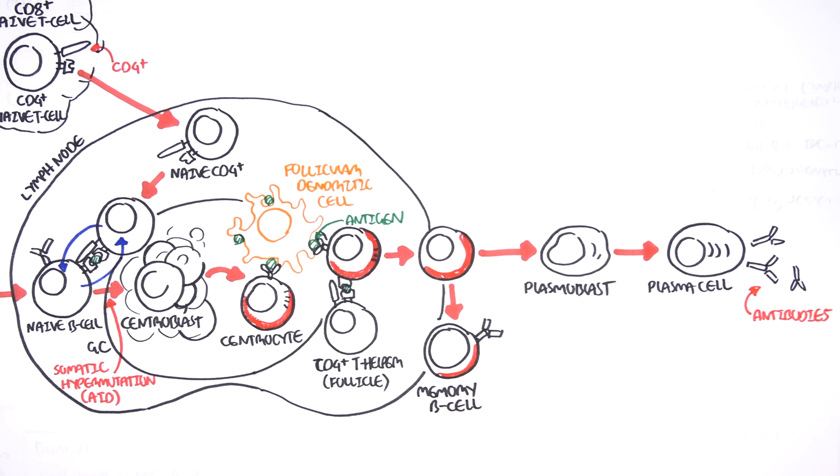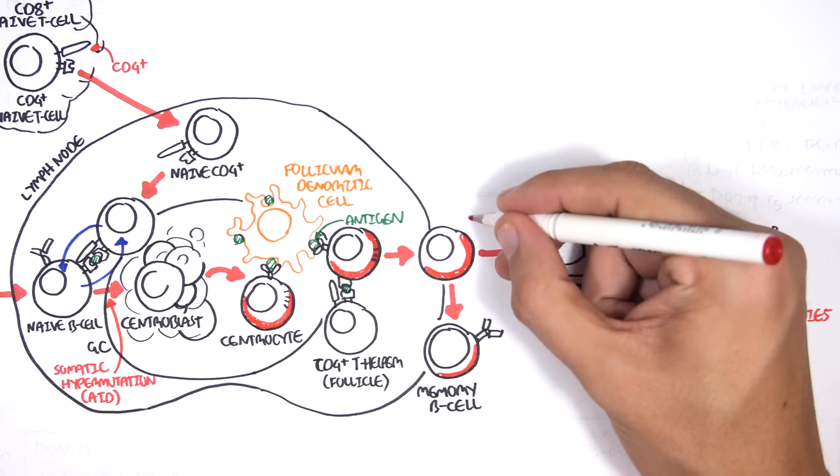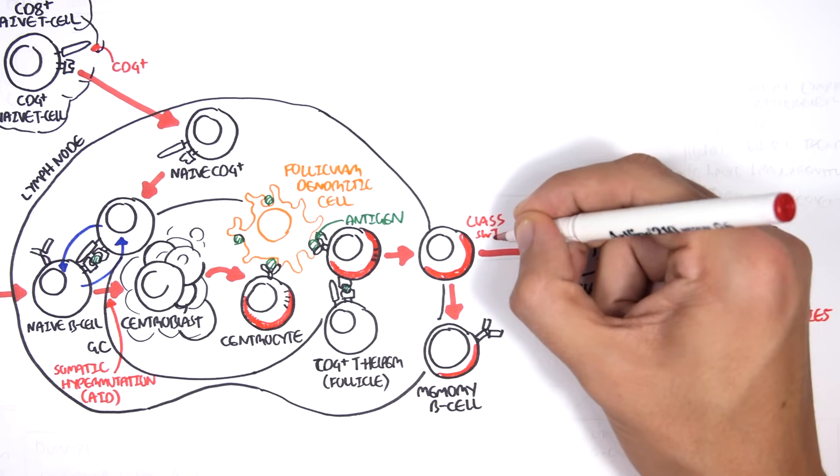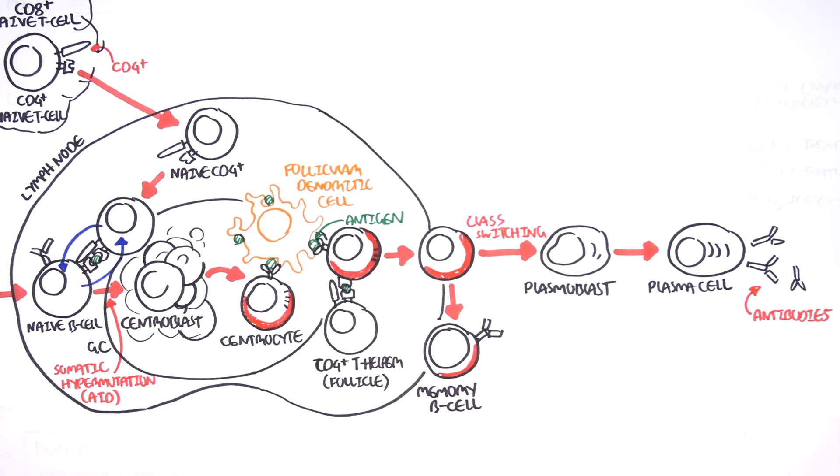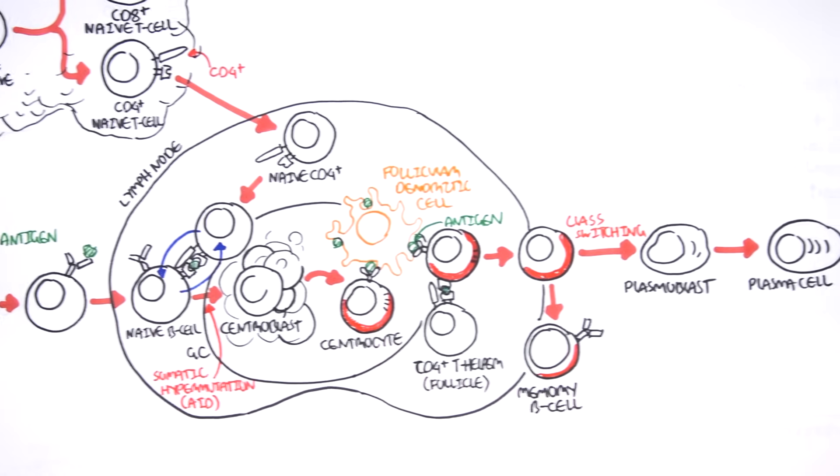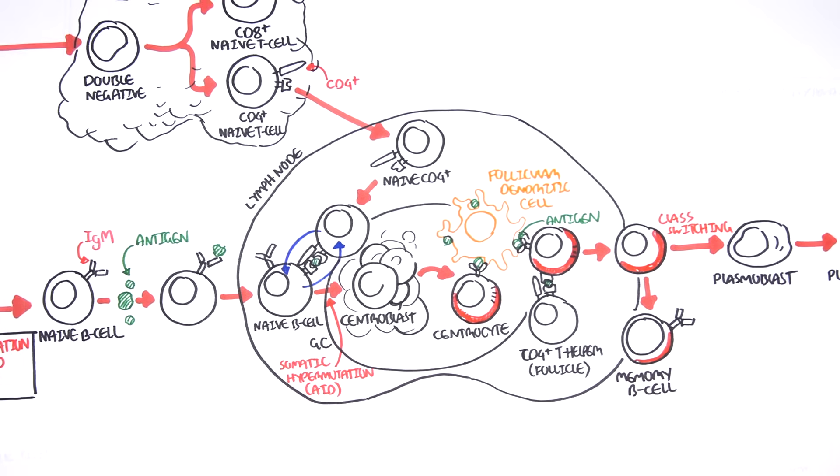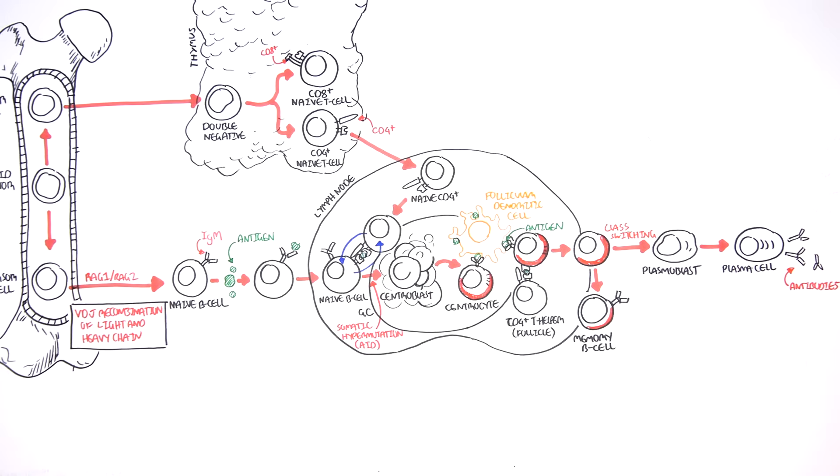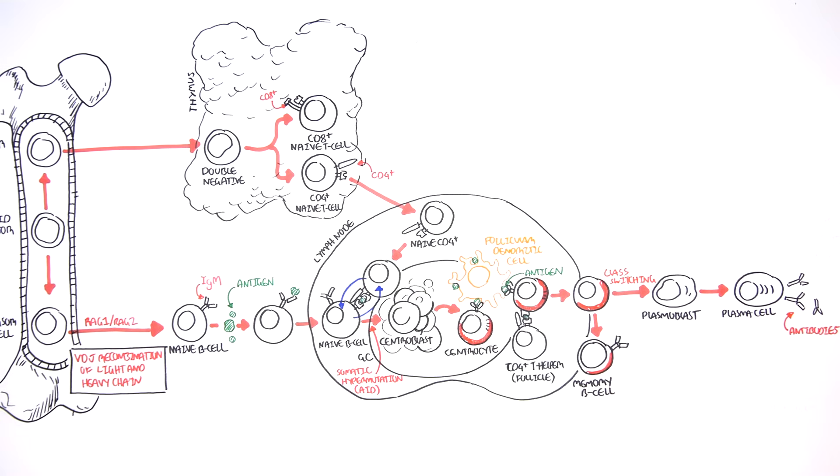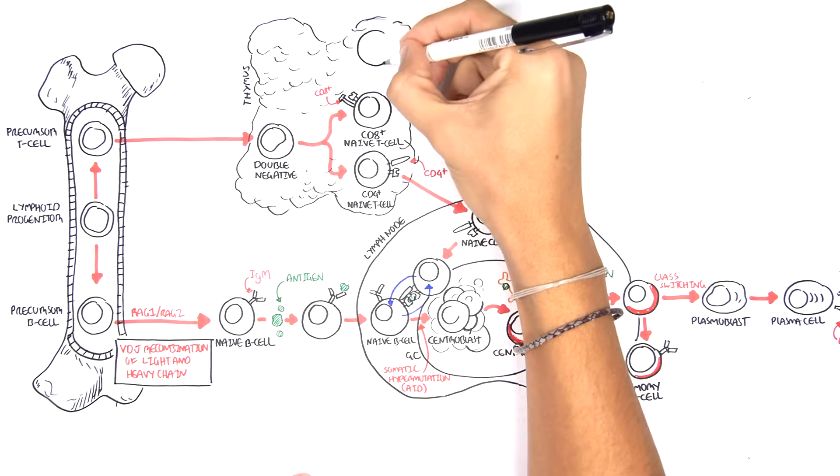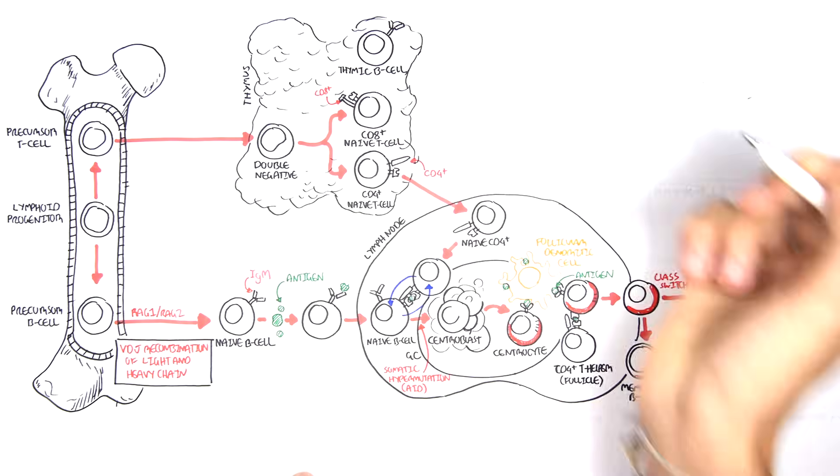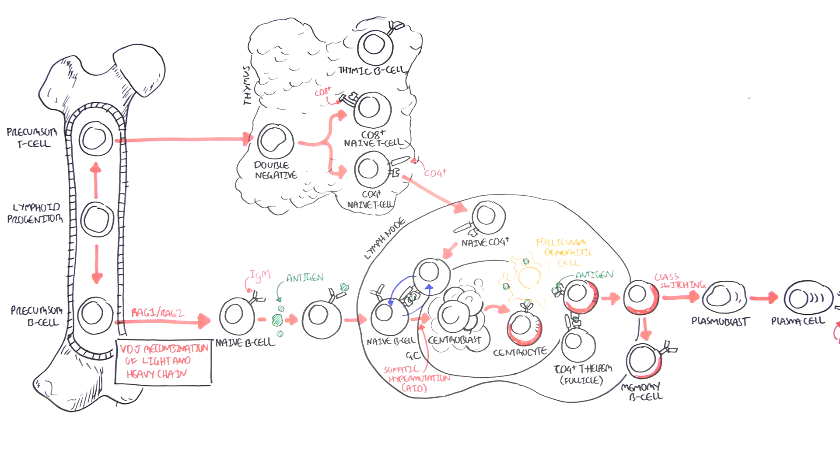When the centrocyte receives signals from the T cells to differentiate, the centrocyte undergoes class switching, which is where the constant region of the antibody can become a specific class. It can change into an IgE, IgA, or IgG, for example. We also have to introduce the thymic B cells, which are B cells that reside in the thymus, but we will not go into the functions of the thymic B cells here.